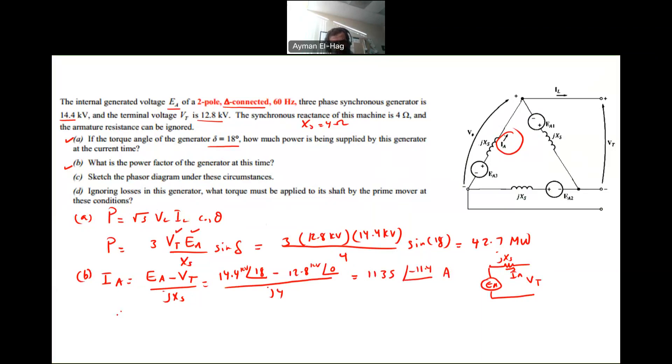This is IA. Now, the power factor is equal to cosine of theta V terminal minus theta I armature, which is equal to cosine of 0 minus minus 11.4. And this will give me a power factor equal to 0.98 lagging. So this is the power factor of the question.